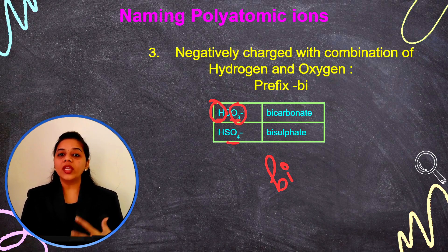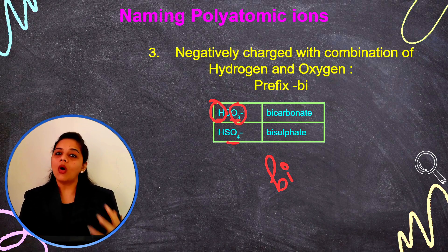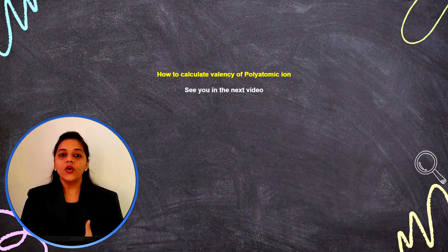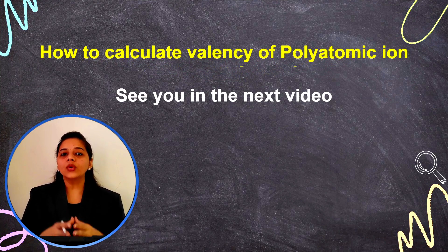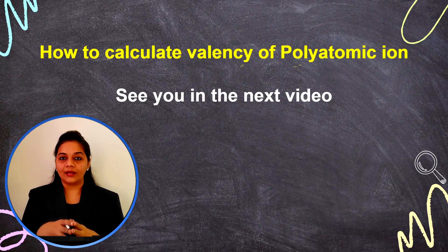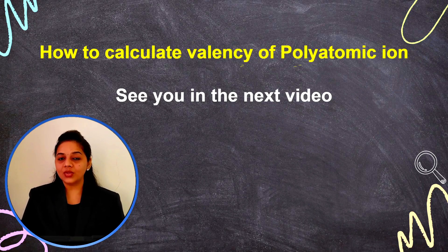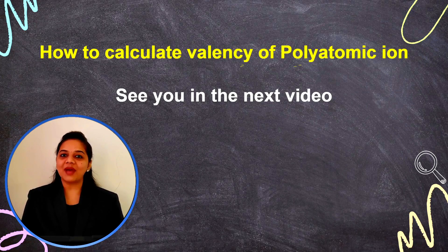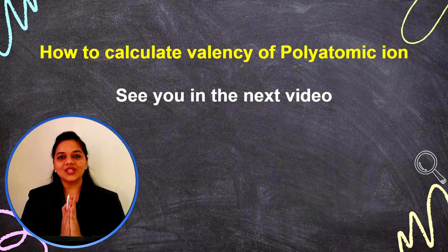So this is how we name all different monoatomic ions and polyatomic ions. In the next video, we will learn how to calculate the valency of polyatomic ions. I hope you have understood this topic. If you have, please like, share, and subscribe to my YouTube channel, Curious Minds with Hemangini. Thank you, children.